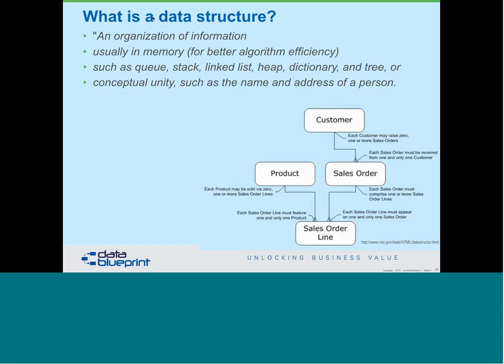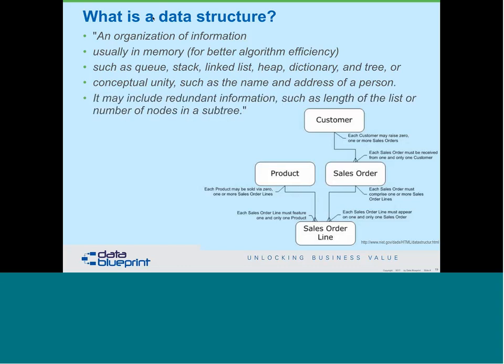There's another aspect: the definition of a conceptual unity, meaning it just represents one thing. For example, linking me with my address is a householding construct — Peter lives at that house until Peter doesn't live there anymore. When presenting or transferring information, we may also include redundant information. For instance, if I have a list of five things and I state the list has five things in it, that's redundant because a computer can count the number of things in the list. We don't necessarily need to include that, or the number of nodes in a subtree.